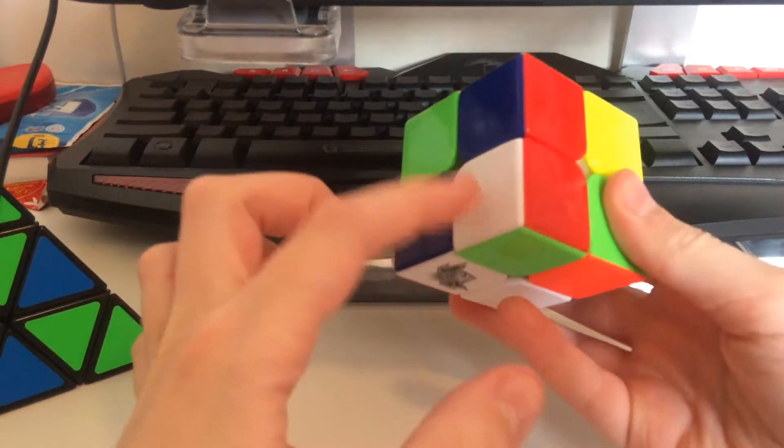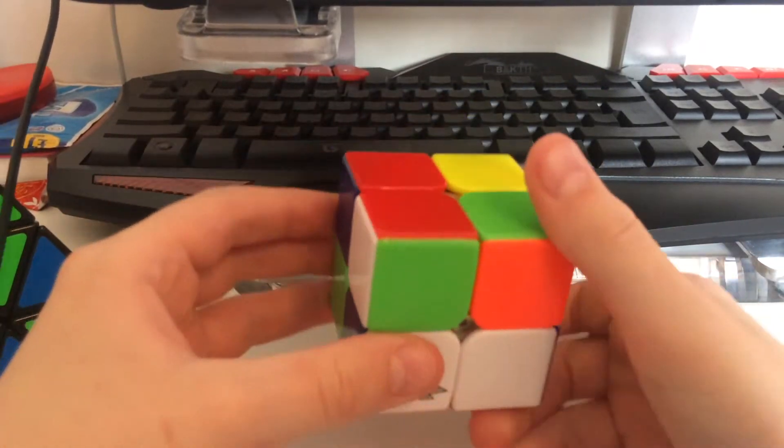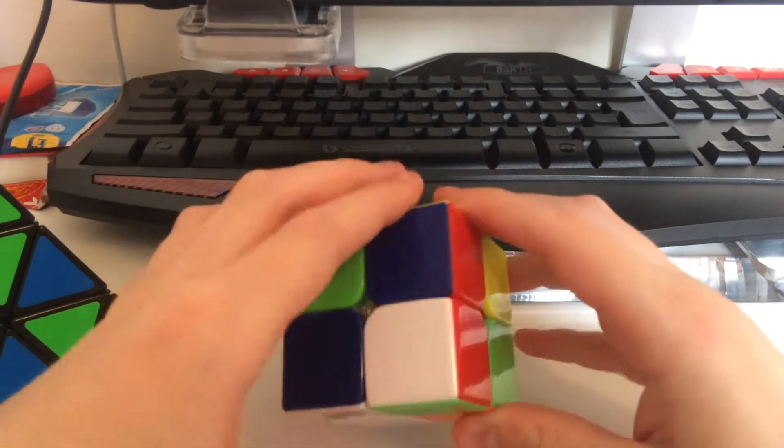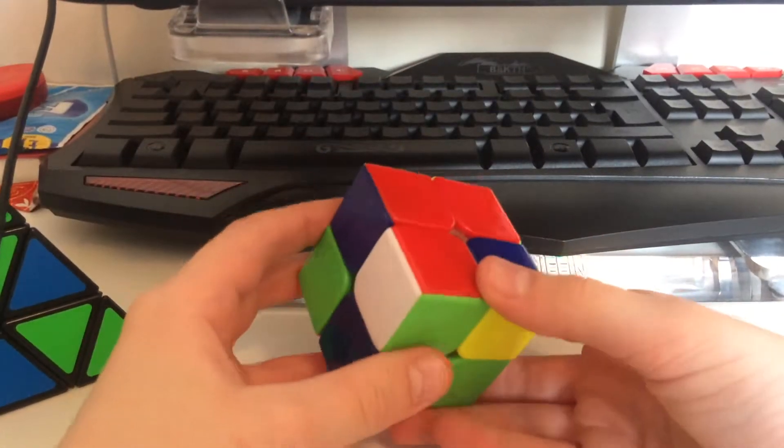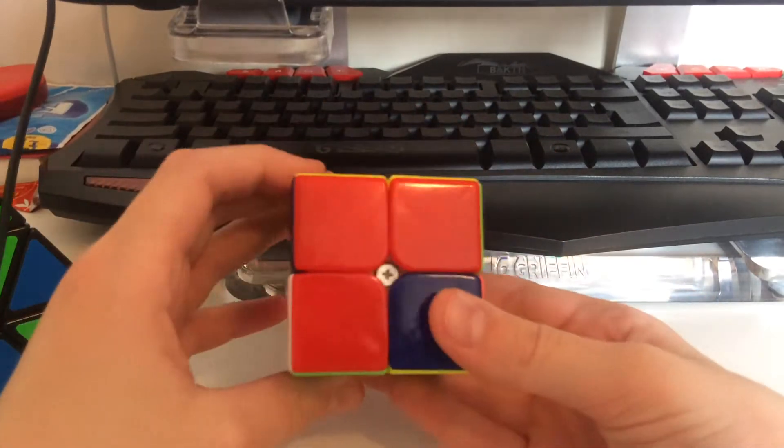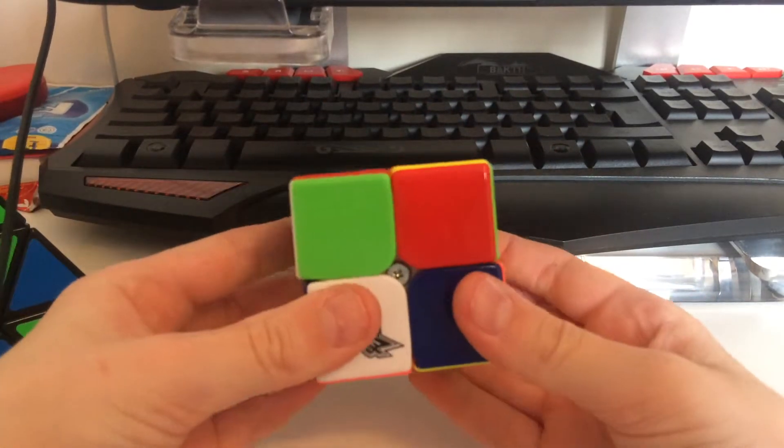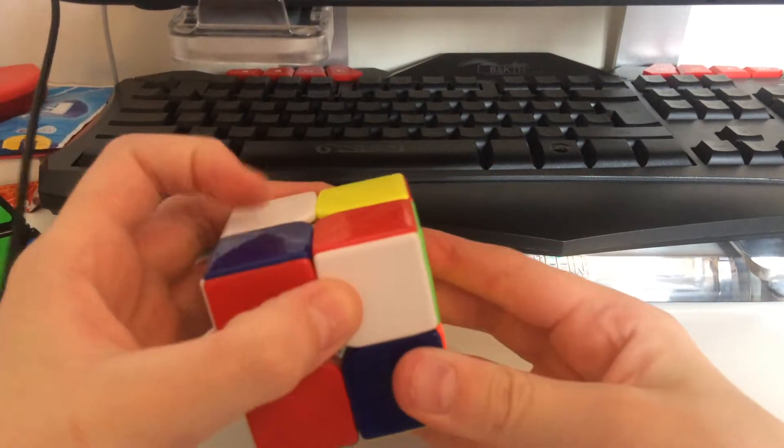To get this to the top layer, you just want to put it like that, or you can do it that way. You want to get this up here, just do this. Up and across and then down, now you've got it here.